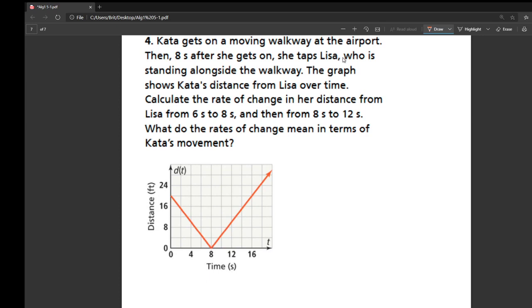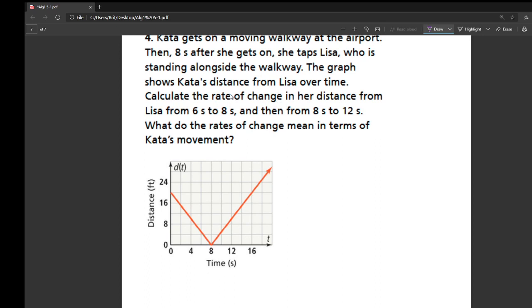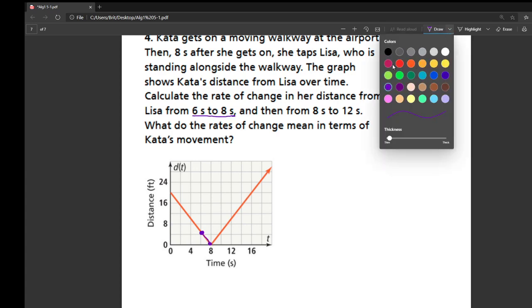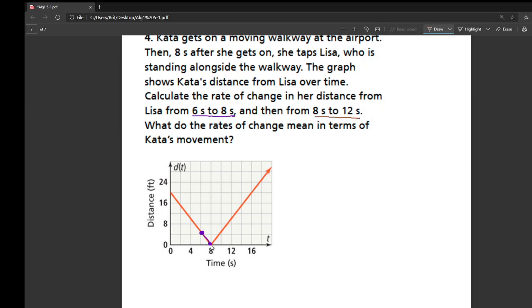Now we have a problem with a girl named Kata. She's chilling on one of those moving walkways at the airport, probably kind of bored. After eight seconds, she taps Lisa, who's standing alongside the walkway. The graph is showing Kata's distance from Lisa over time. So this is where she taps her. They want us to calculate the rate of change from six to eight seconds, and then from eight to 12 seconds.